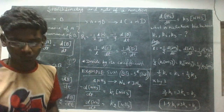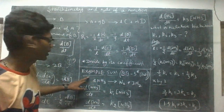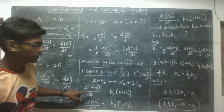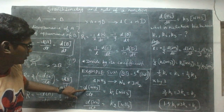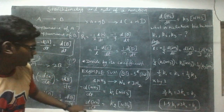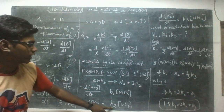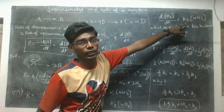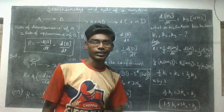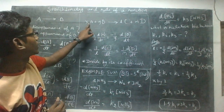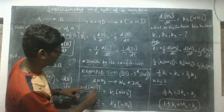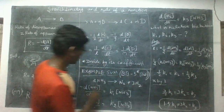Let's take a look at this example. D is the rate, K1 is the concentration of K1, K2 is the concentration of K2. K1, K2, K3 — if we are looking at the coefficient, we need to see the coefficient. If we have K2, the coefficient is 2.